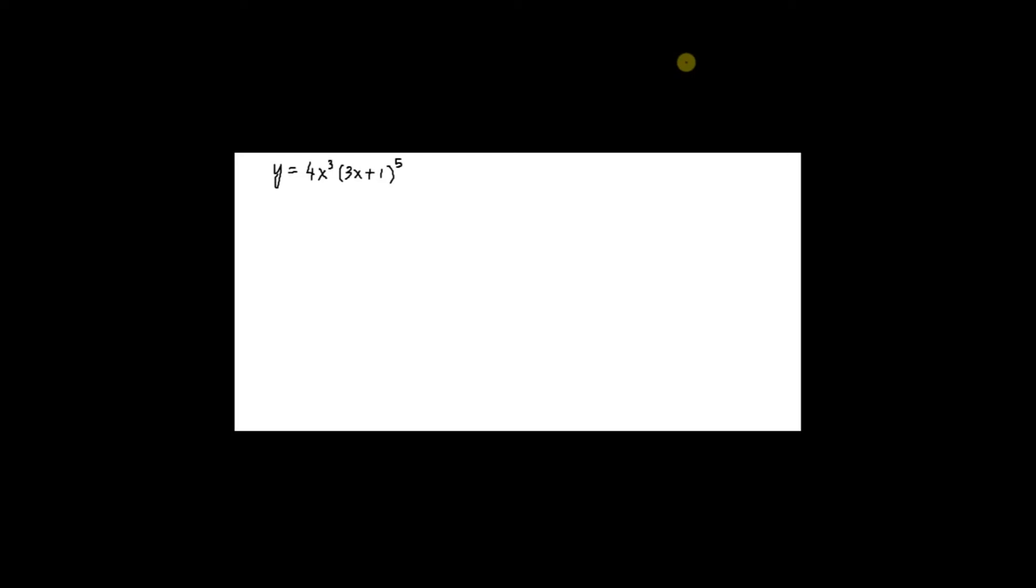Given that y equals 4x cubed times 3x plus 1 to the power 5, find dy dx.